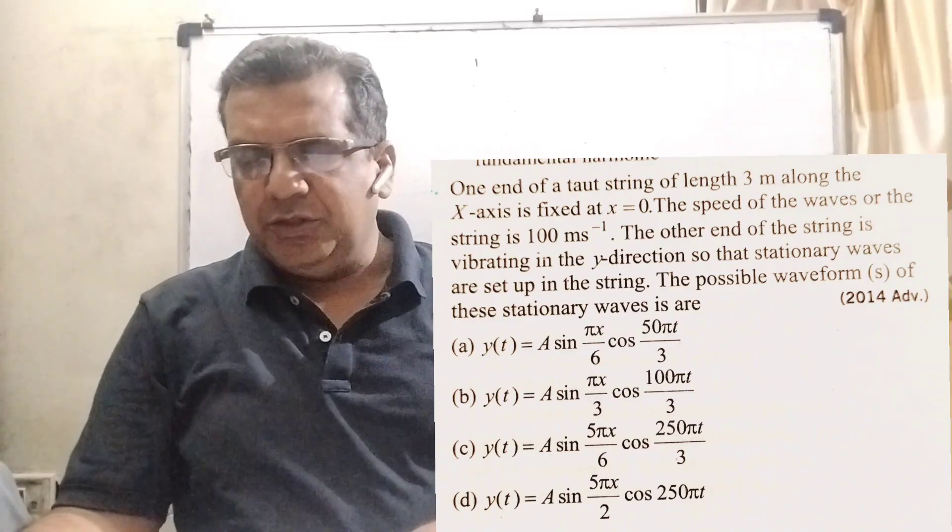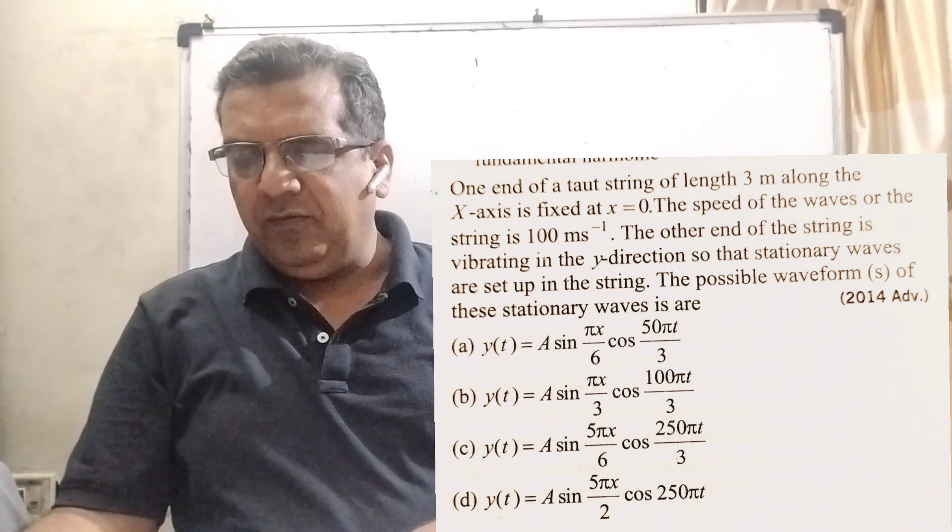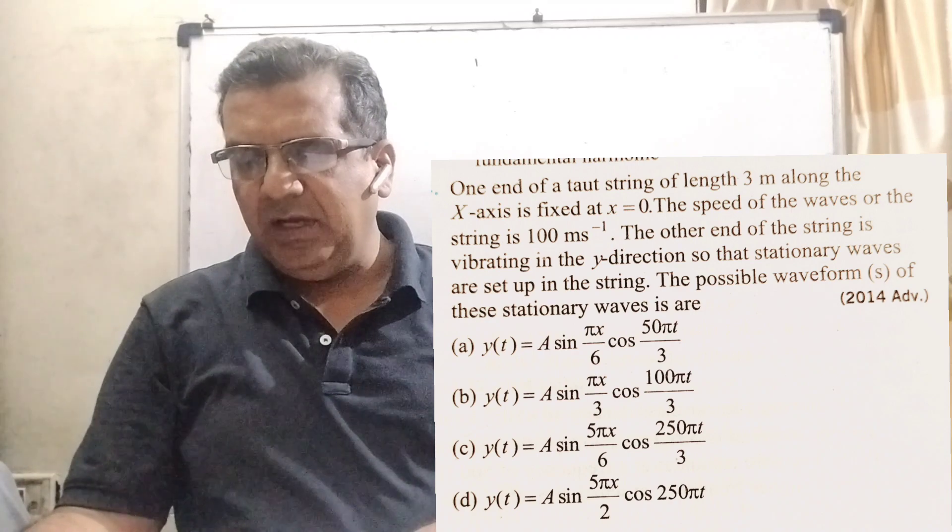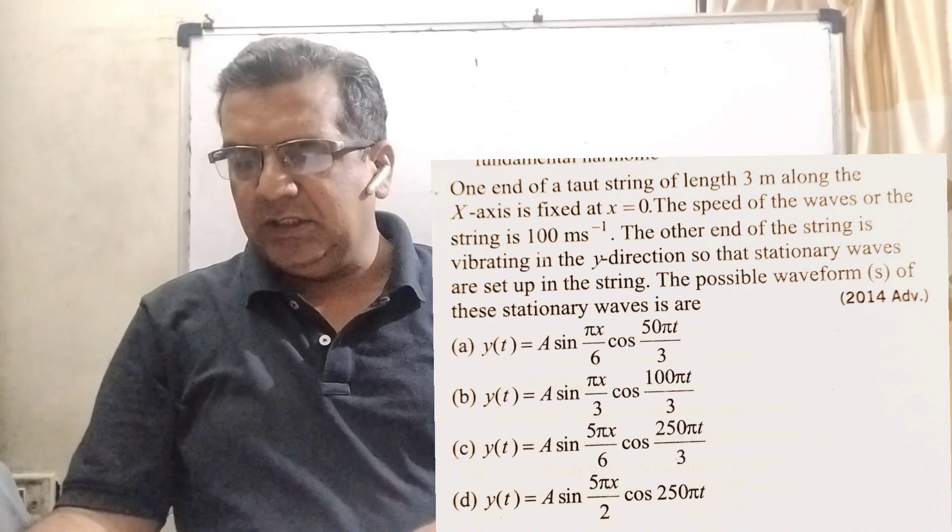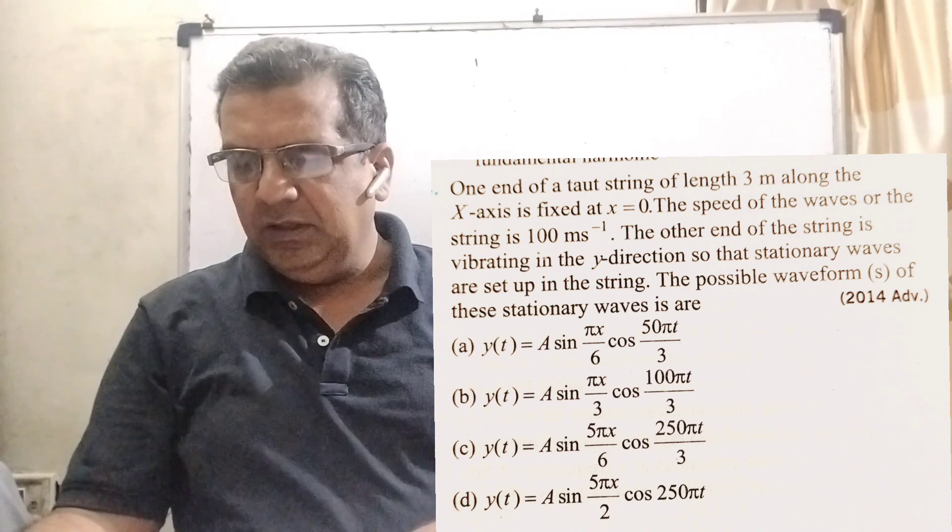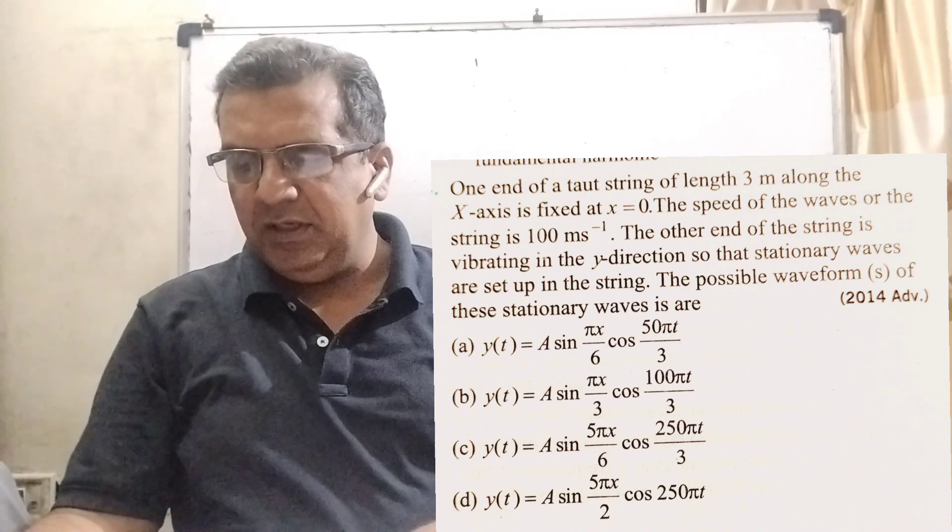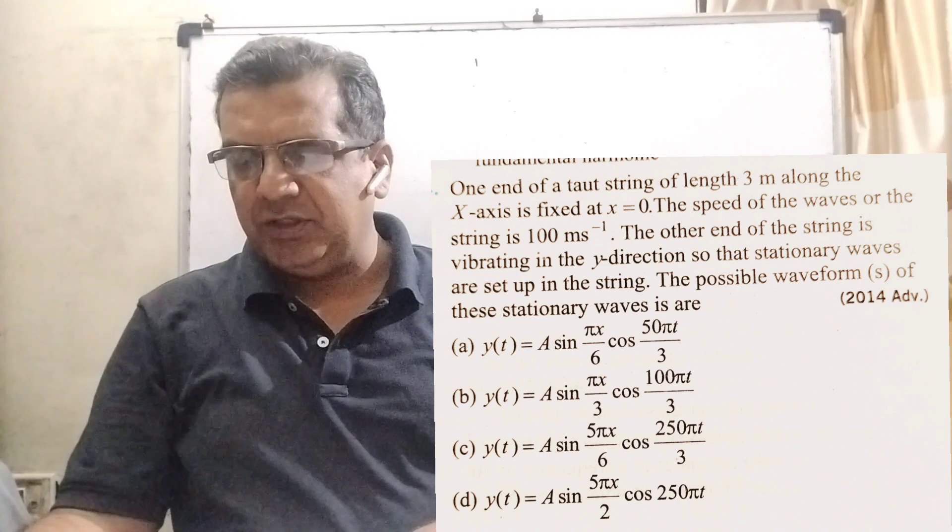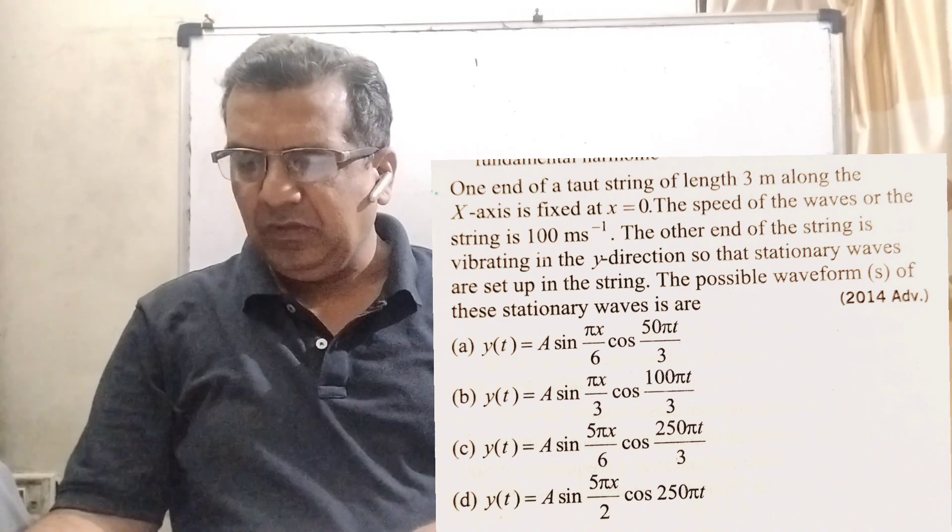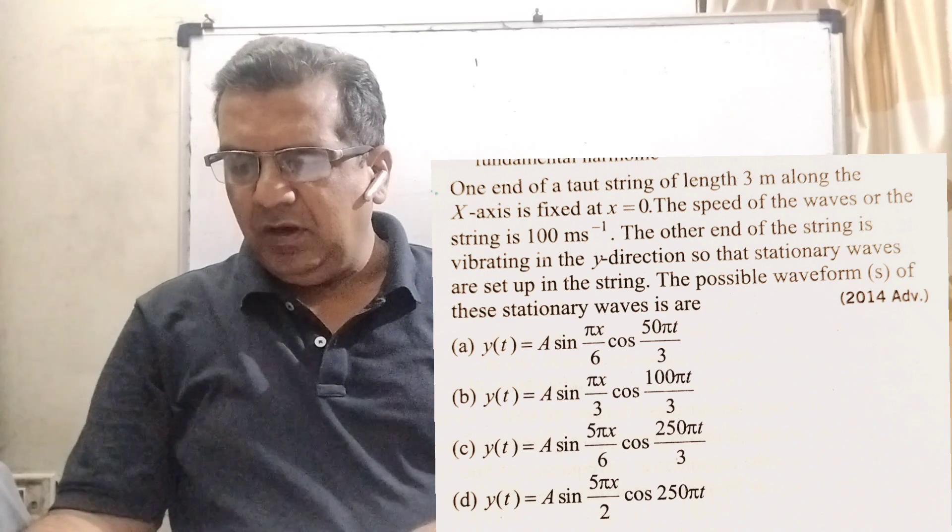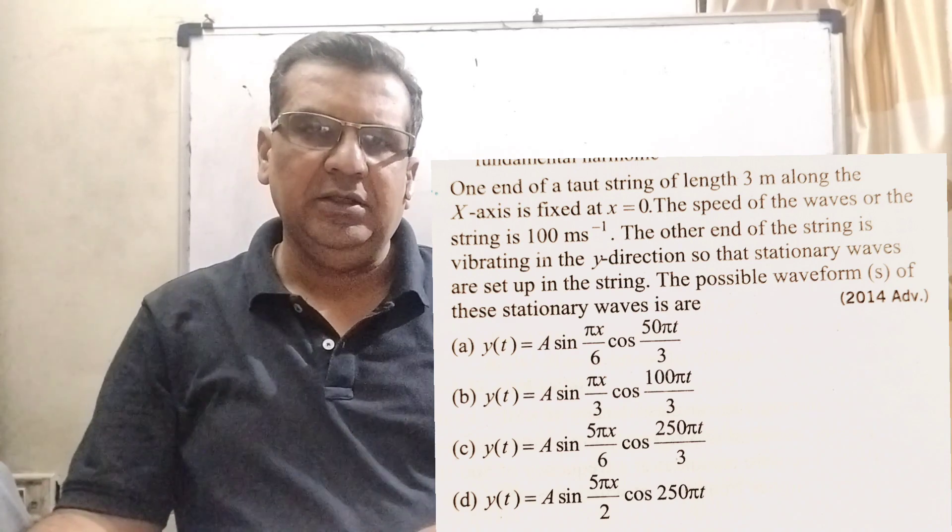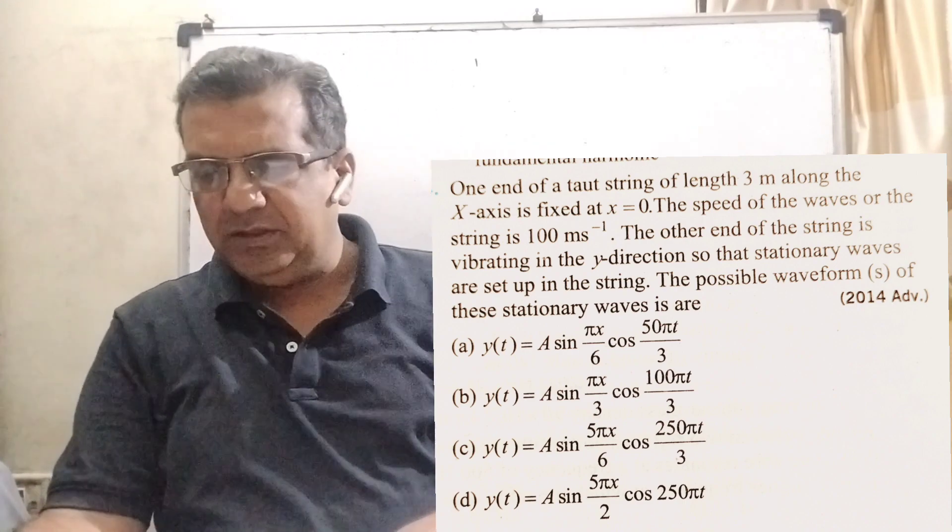Now, here is the question. One end of a taut string of length 3 meter along the x axis is fixed at x equal to 0. The speed of the waves on the string is 100 meter per second. The other end of the string is vibrating in the y direction so that stationary waves are set up in the string. The possible waveforms of these stationary waves is or are - it is a multiple choice question. Here we have given four options.